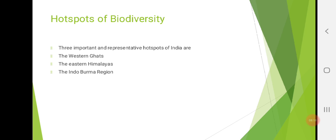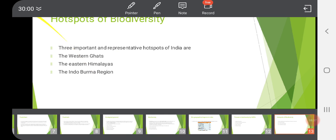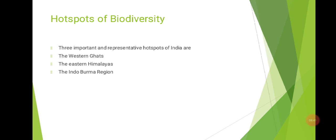Now, hotspots of biodiversity. Here, three important and representative hotspots of India are given. Western Ghats, Eastern Himalaya and Indo-Burma region. These are the three hotspots of biodiversity in India. Then, so, this is all about your revision. Thank you.